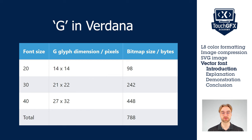The final flash-saving concept in Touch GFX is Vector Fonts, which follows the same principle as SVG but for fonts. Vector Fonts use the same principle as SVG to store information, making them very suited when using multiple sizes for the same font or when using big sizes. Here you can see the example of the letter G in Verdana in three different sizes. With regular bitmap it takes 788 bytes, but with Vector Fonts it only takes 170 bytes.